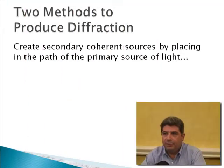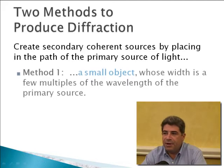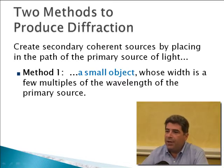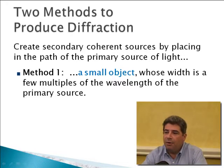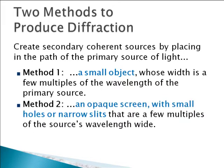Now let's talk about the two different methods of producing diffraction. First of all, we have to create secondary coherent sources of light, and there are two methods. The first method is to place a small object, the width of which is a few multiples of the wavelength of the primary source, in the way of the light emanating from the primary source. The second method is to use an opaque screen with small holes or narrow slits in the way of the primary source, which creates the secondary sources at the point of the slits.